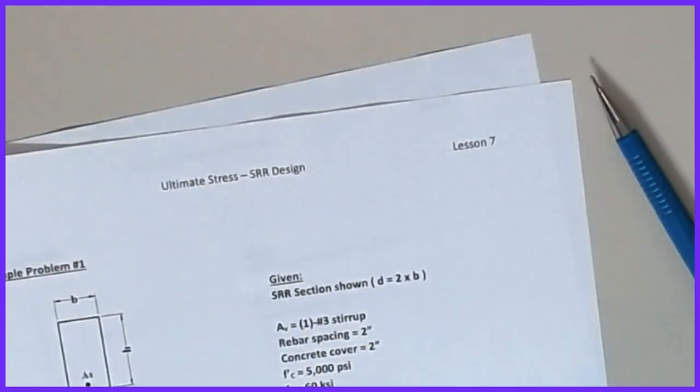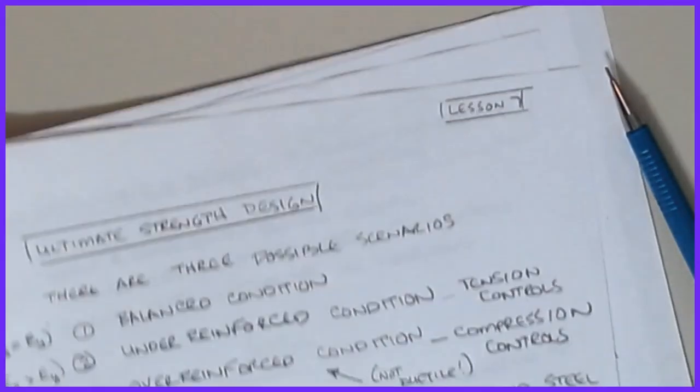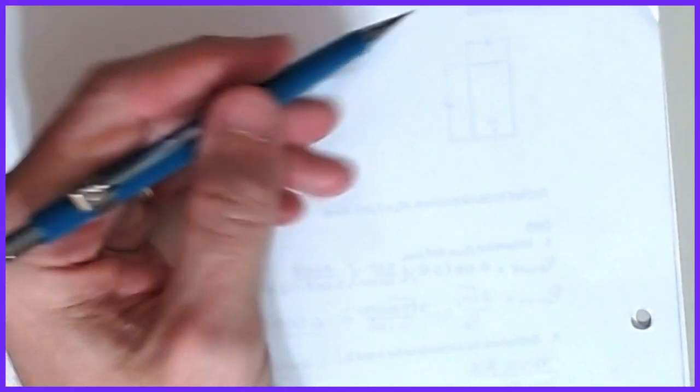In summary, we've looked at the procedure for design when we know the load and need to find either the beam dimensions or the area of steel for given dimensions, then perform all the necessary checks. I hope that's been fairly clear. Please toss us a comment if you have questions or suggestions for improvement, like the video if you found it helpful, subscribe to the channel, and have a wonderful evening — happy engineering.